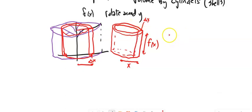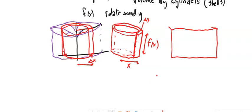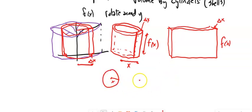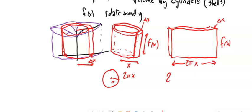This cylinder has a hole in the middle with this little change in x. I can cut it and fold it out, and I get a rectangle with a little bit of width — that width is my Δx. That's like how long the lip is. The height is f(x). And this distance here, the distance around the outside, is the circumference of the circle: 2π times the radius, so 2πx.